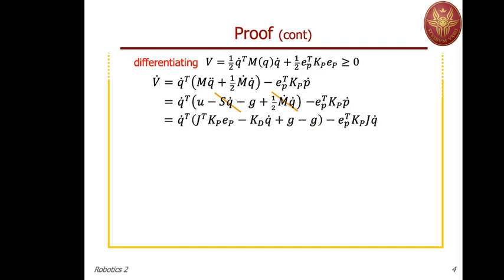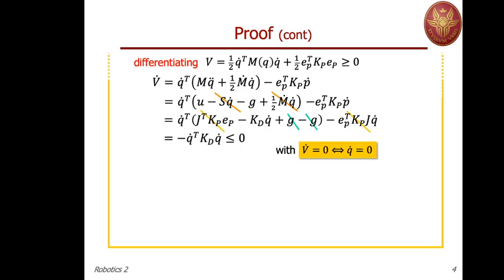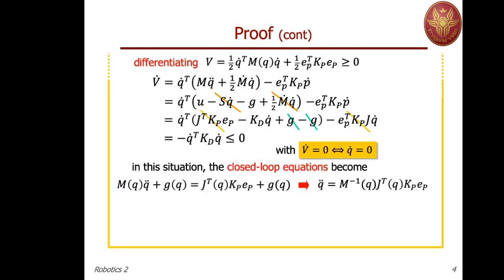We use the property of conservation of energy so that the factor M-dot minus 2S vanishes in a quadratic form with joint velocity q-dot outside. This holds for any factorization of the Coriolis and centrifugal term. These two terms cancel. We then replace the control law: u equals J-transpose Kp times pose error, minus Kd q-dot, plus g. The gravity terms cancel, and the first and last terms cancel because they are transposes of each other with opposite signs. We are left — as in the joint-space PD-plus-gravity-cancellation case — with V-dot equal to minus q-dot transpose Kd q-dot, which is less than or equal to zero.